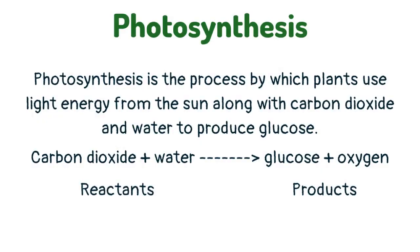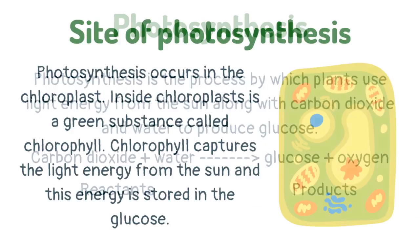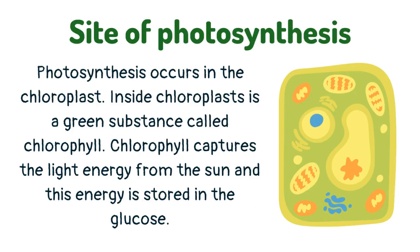Photosynthesis is the process by which plants use light energy from the sun, along with carbon dioxide and water, to produce glucose and oxygen. Photosynthesis occurs in the chloroplast. Inside chloroplasts is a green substance called chlorophyll. Chlorophyll captures the light energy from the sun and this energy is stored in the glucose.